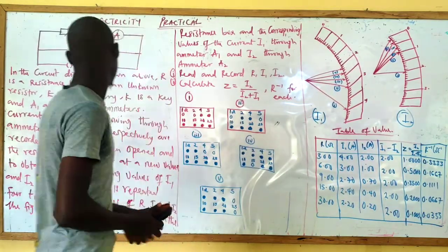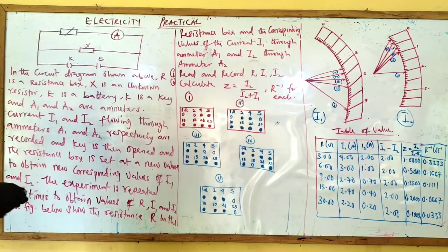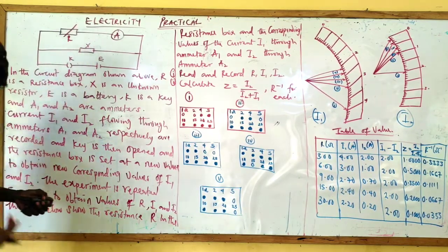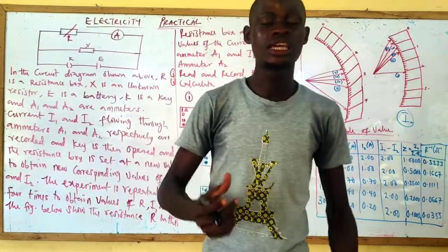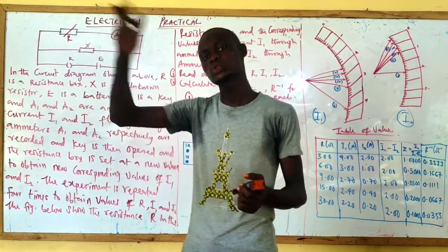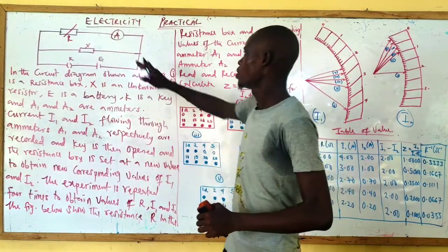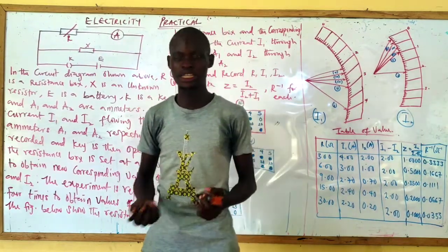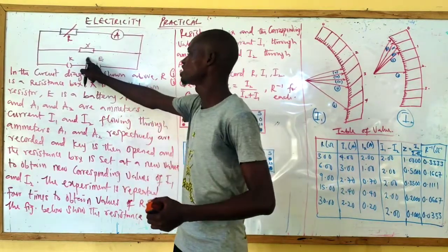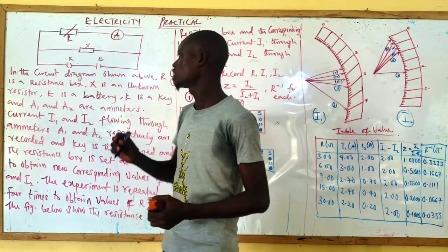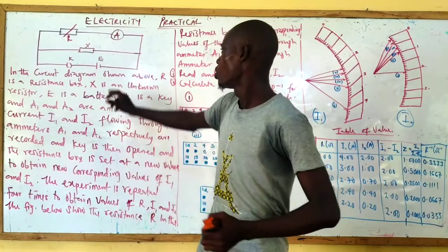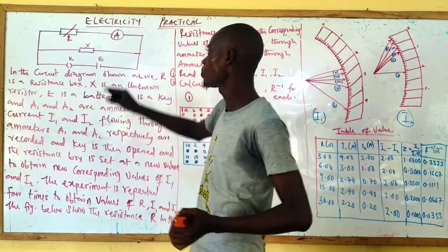Take a look at this. We are given a circuit whereby we have a resistance — this symbol indicates a variable resistance, and the variable resistance we are going to use is a resistance box. You are not given the resistance box, but you are assumed that the experiment has been performed. We are given the ammeter, whose function is to measure the current flowing through the circuit. We also have an unknown resistance X, a key, and the EMF or battery to power the circuit.